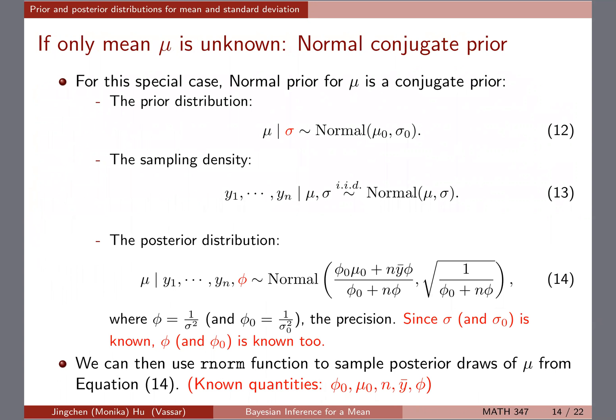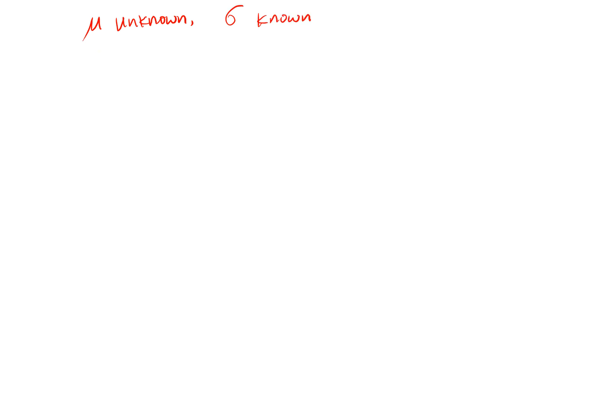Now the question is how we arrive at this normal posterior. This will be mostly an algebra exercise, and I want to walk through the key steps. Knowing how to do the basic derivation can help a lot in understanding Bayesian inference, and later if you take more advanced courses or implement more complicated models, these derivation skills — recognizing terms and combining them — will help you go much further. We're doing mu unknown and sigma known.